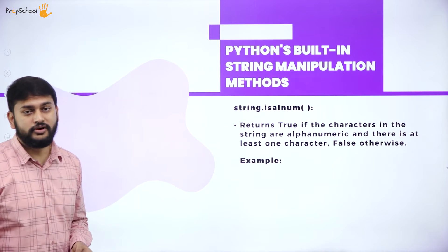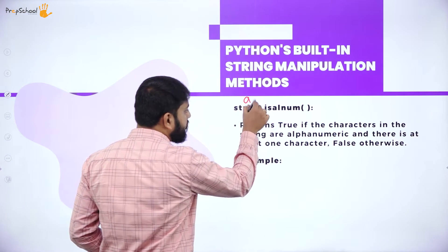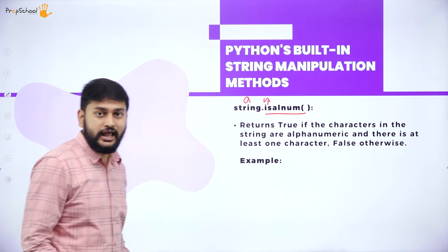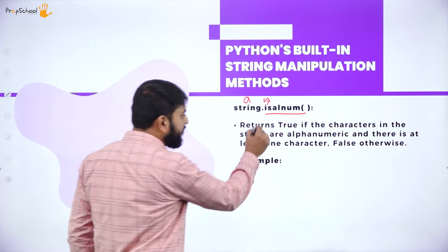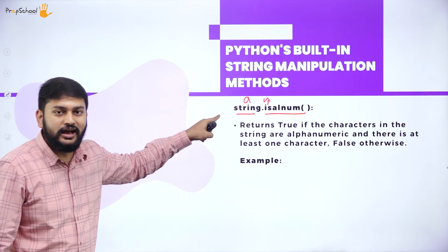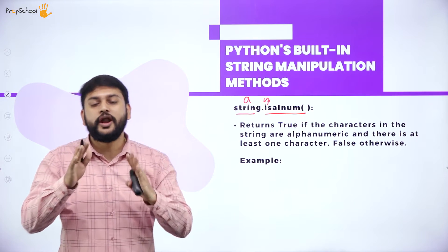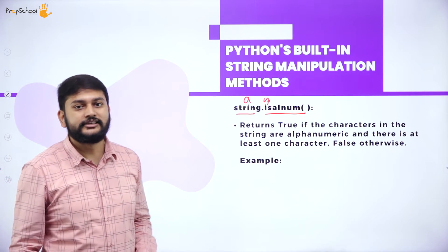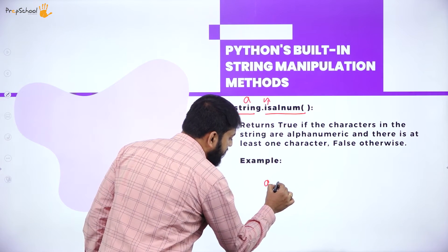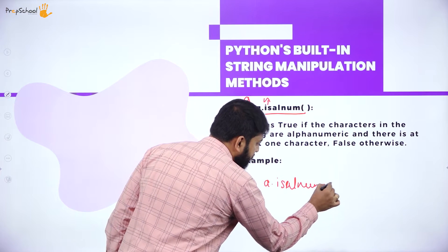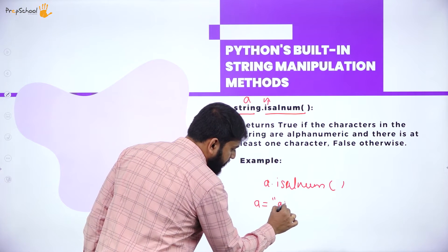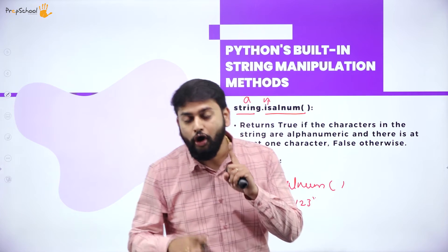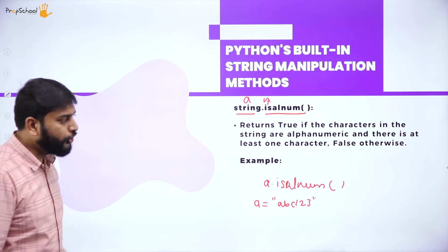The next method is isalnum(). Whenever you see 'is', understand that I'm checking something. isalnum() checks whether the string is alphanumeric — a combination of both alphabets and numbers. If the string is alphanumeric, it returns True; otherwise it returns False. For example, if a = 'abc123', then a.isalnum() returns True.